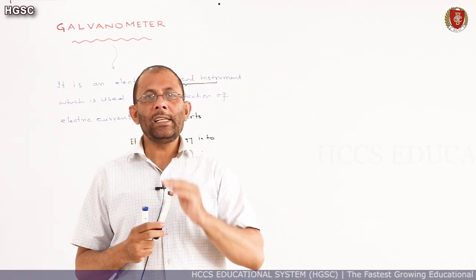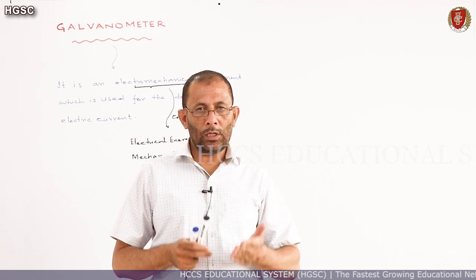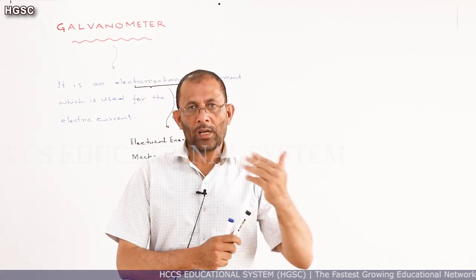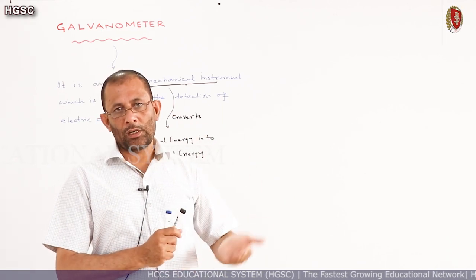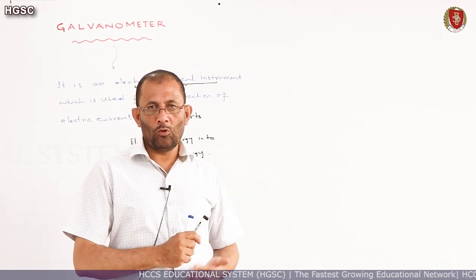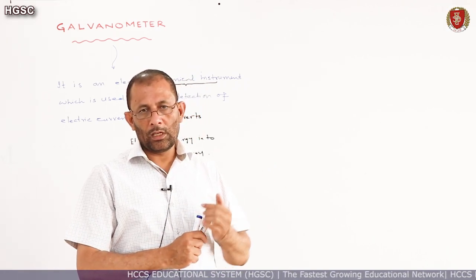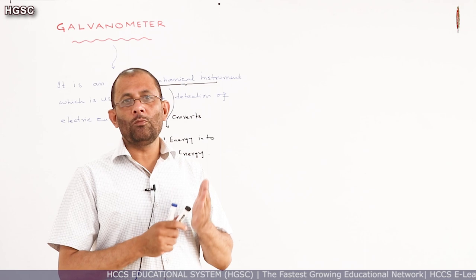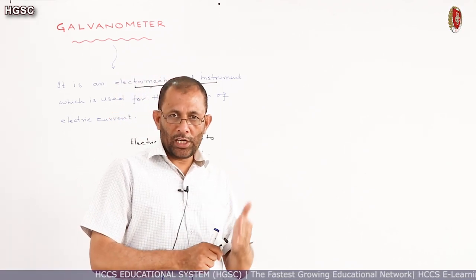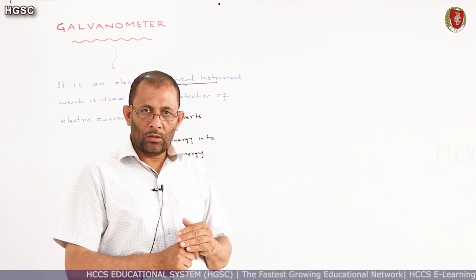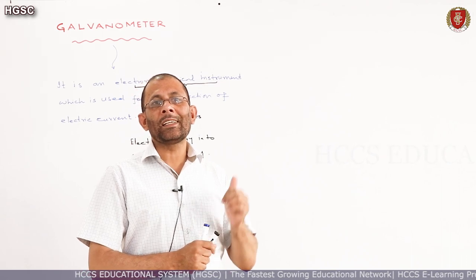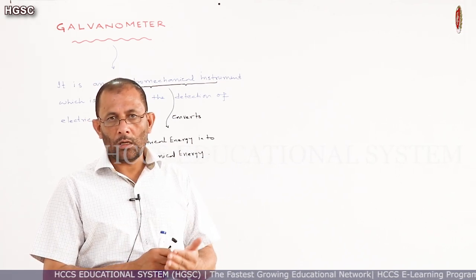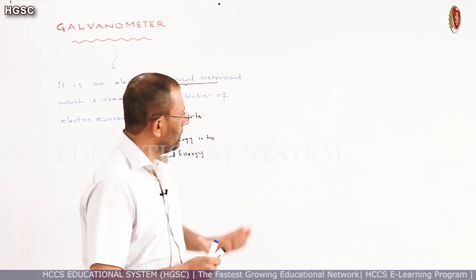The galvanometer does not directly measure current unless we modify it and convert it into an ammeter. When the galvanometer topic is complete, we will study the conversion of galvanometer into ammeter, voltmeter, and ohmmeter — how we modify it to measure current, voltage (potential difference), and resistance of a conductor respectively.